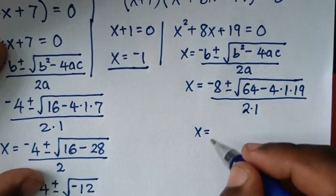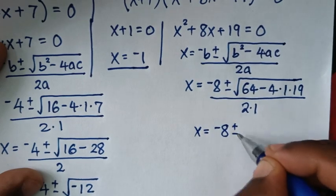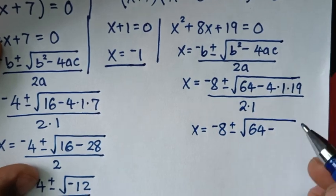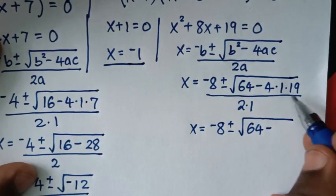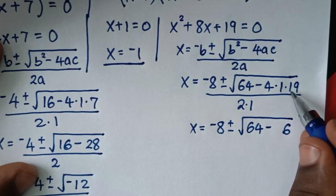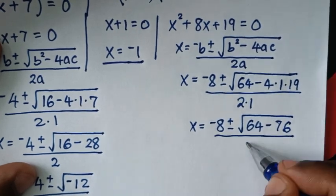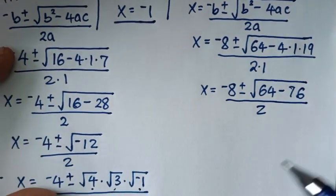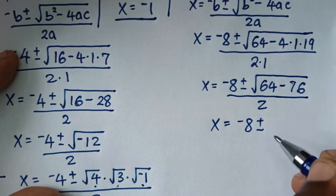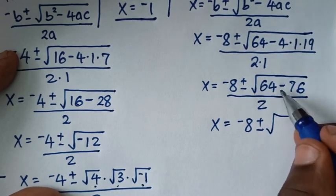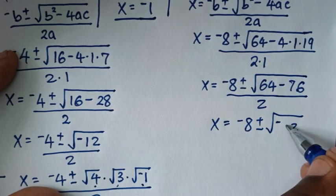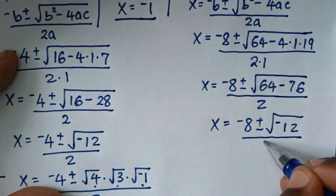x = −8 ± √(64 − 76) / 2. Now 4 × 19: 4 × 9 is 36 carry 3, 4 × 1 is 4 plus 3 is 7, so 4 × 19 = 76. Therefore x = −8 ± √(−12) over 2.